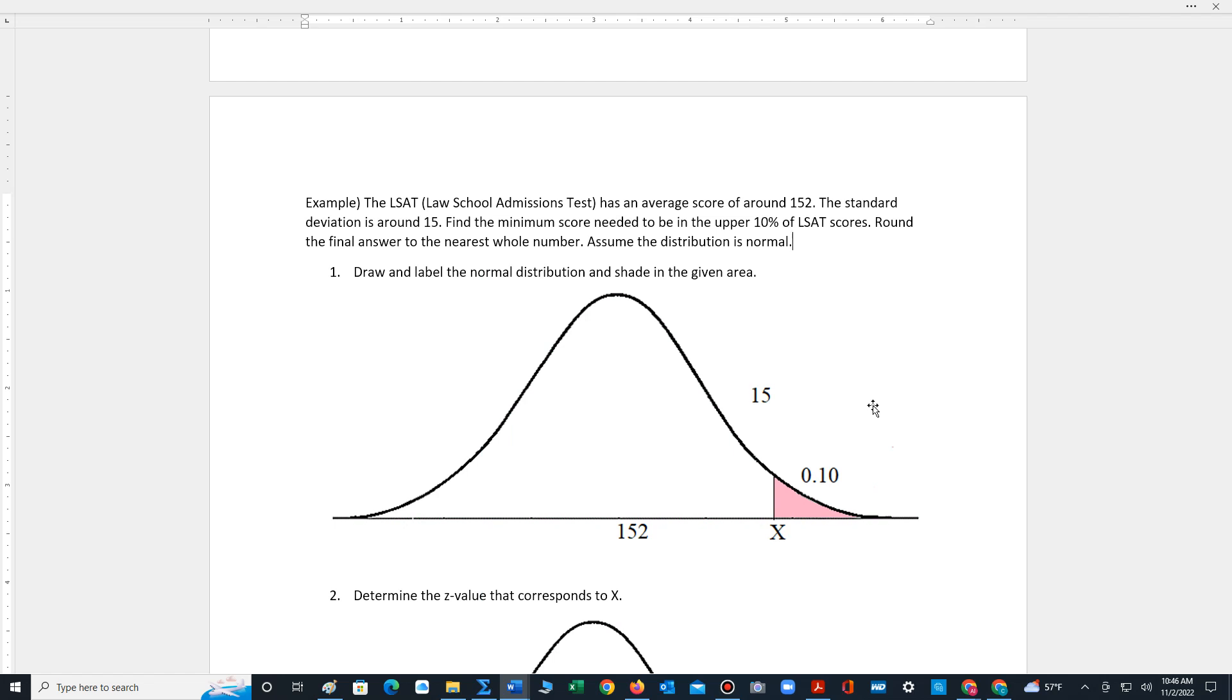The LSAT law school admission test has an average score of around 152. The standard deviation is around 15. Find the minimum score needed to be in the upper 10% of LSAT scores. Round the final answer to the nearest whole number. Assume the distribution is normal.